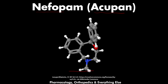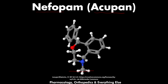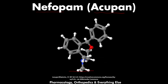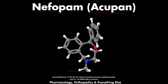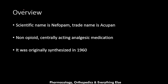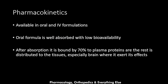Regarding the picture here, it shows the chemical structure of nefopam. The black spheres are for carbon atoms, the white spheres are for hydrogen atoms, the blue sphere is for the nitrogen atom, and the red sphere is for the oxygen atom. The scientific name is nefopam and the most famous trade name is Acupan. It is a non-opioid, centrally acting analgesic, meaning it works on the brain to relieve pain, and it was originally synthesized in 1960.